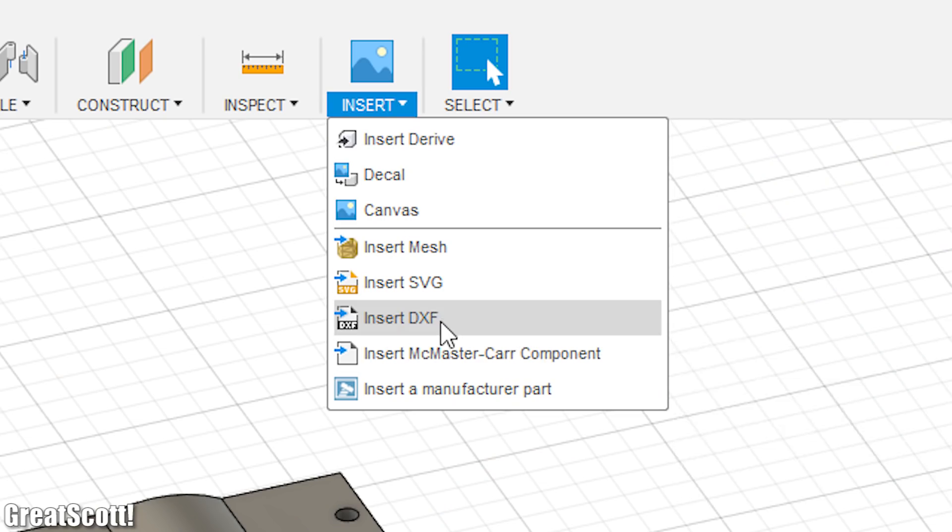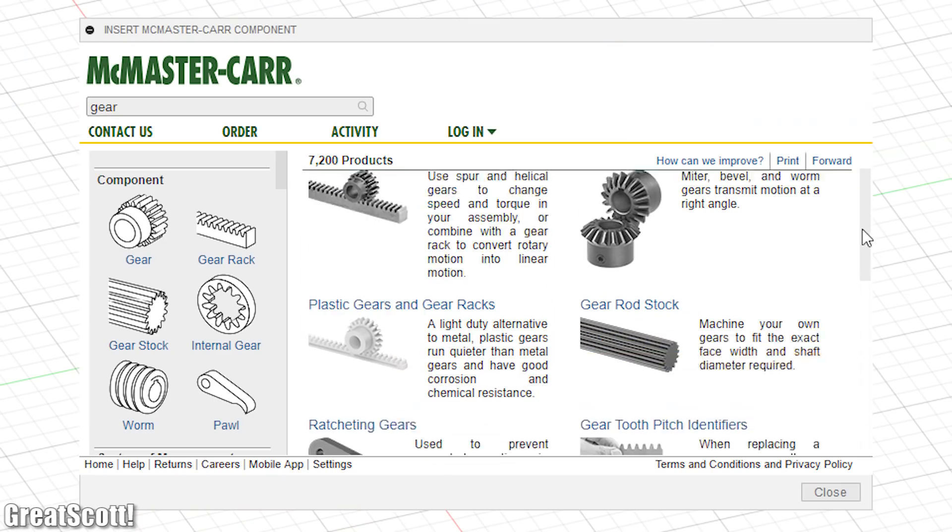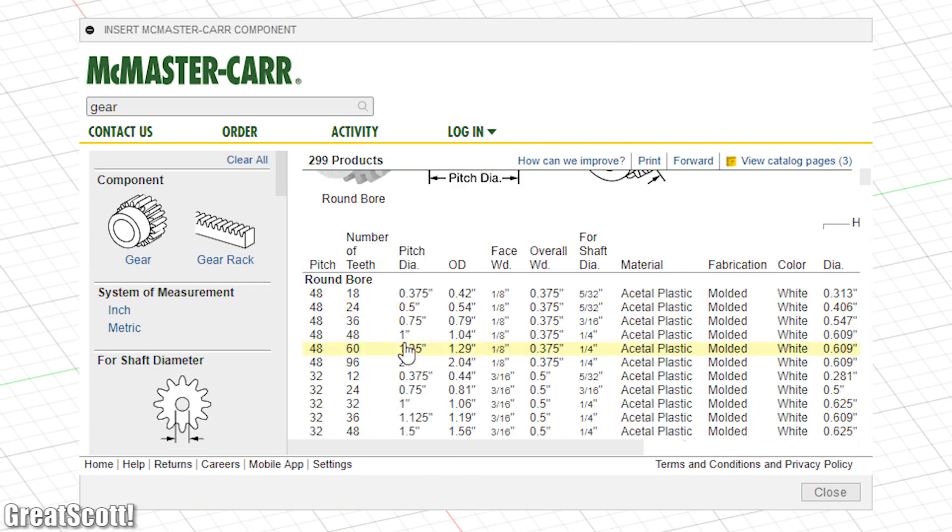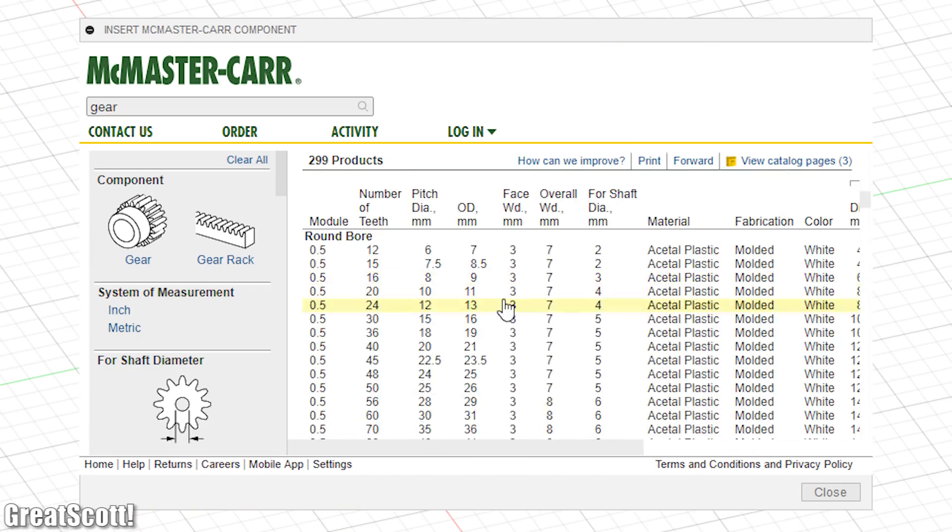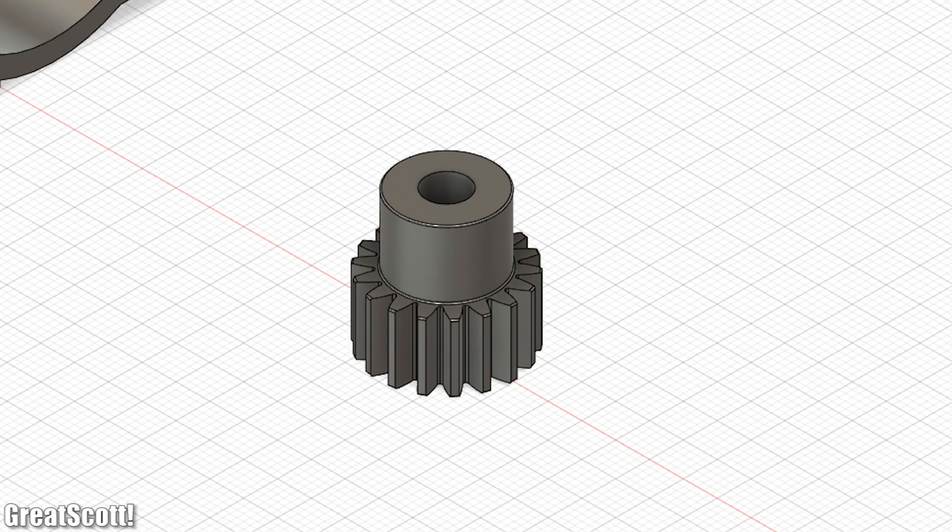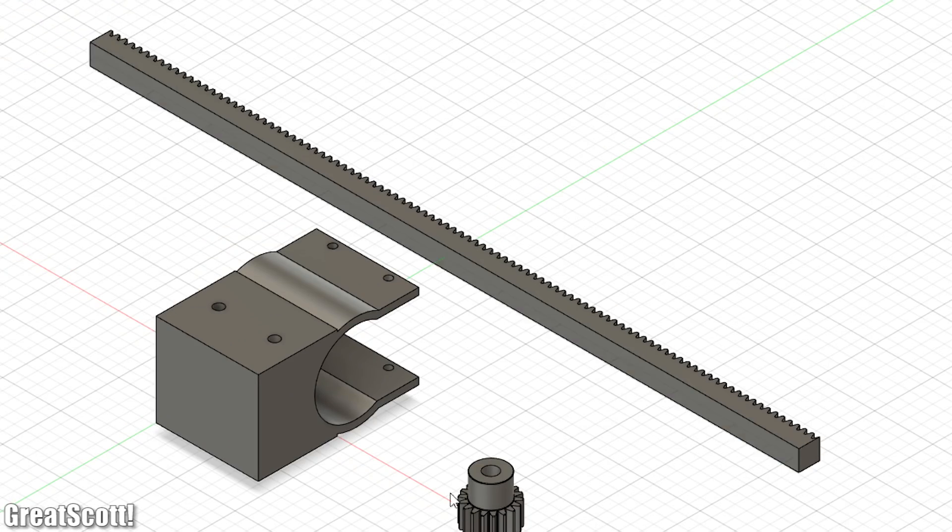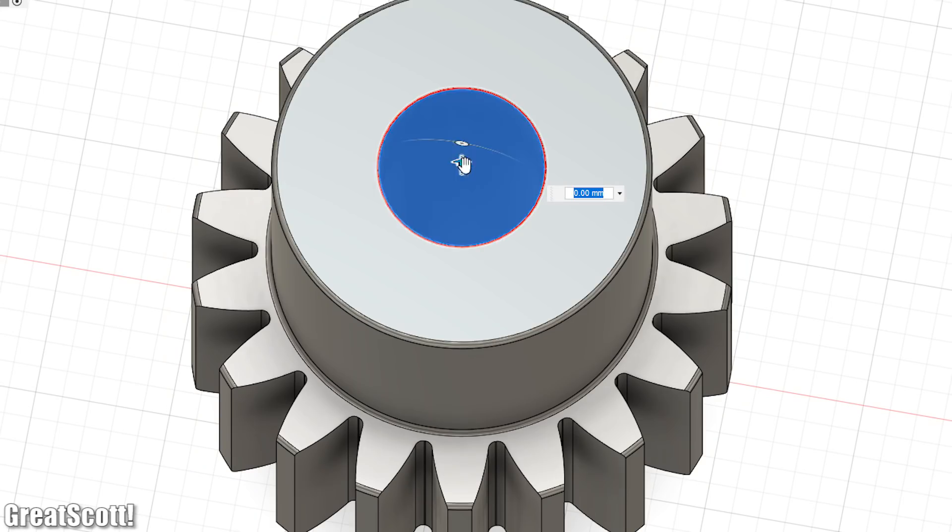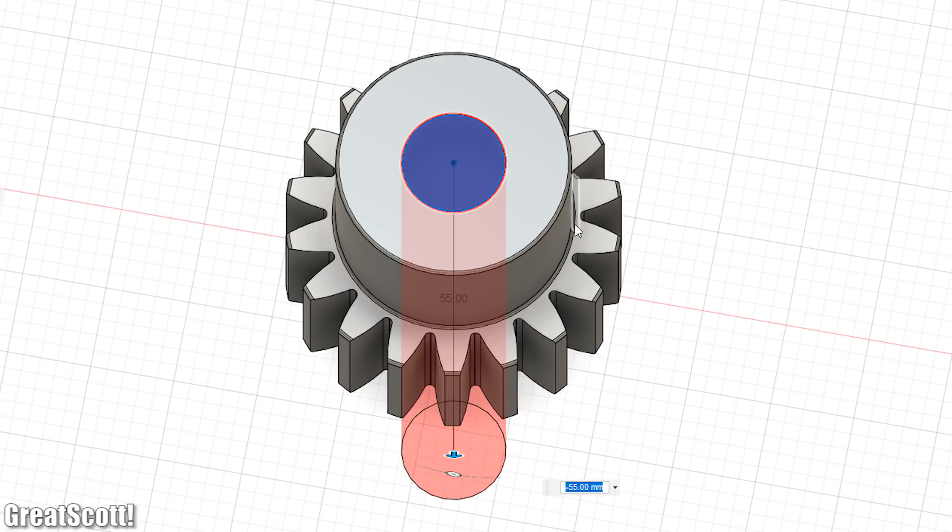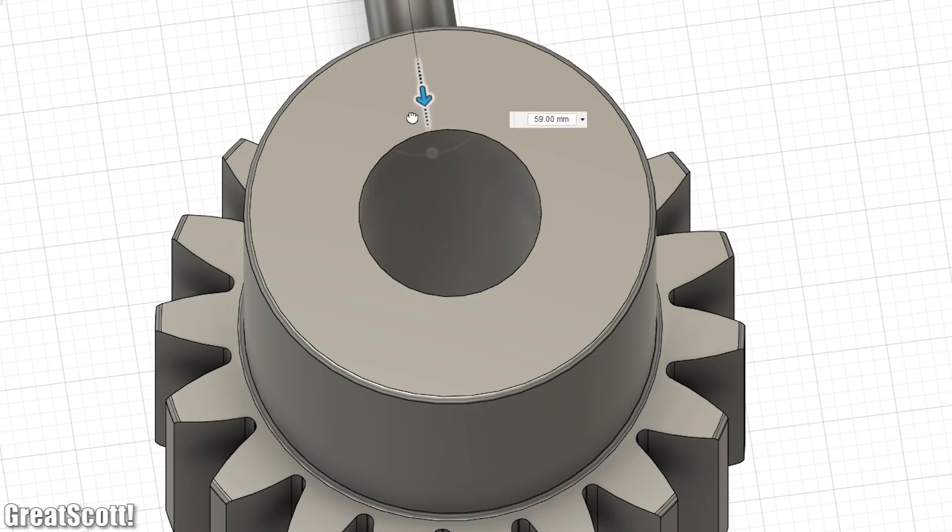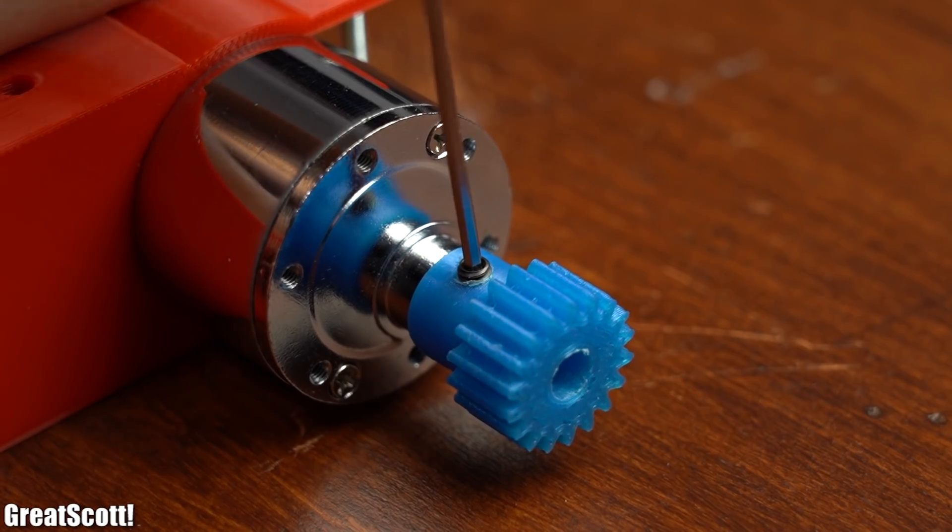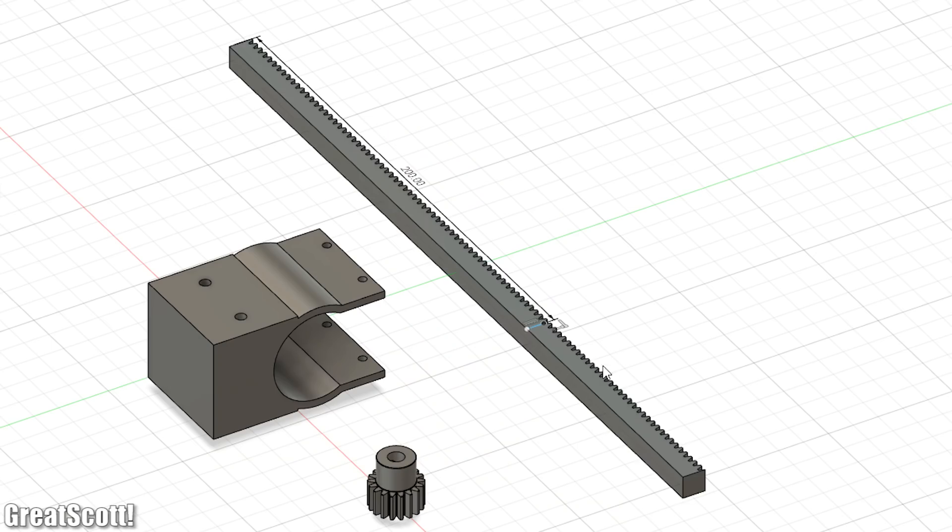Next it was time for the gear system for which I used the McMaster car component library where I chose a fitting plastic gear and gear rack. After then extending the gears mounting hole a bit according to the dimensions of the motor's rotor I also added a 3mm hole to it to later hold it in place with a grub screw. And then continued by shortening the gear rack a bit.